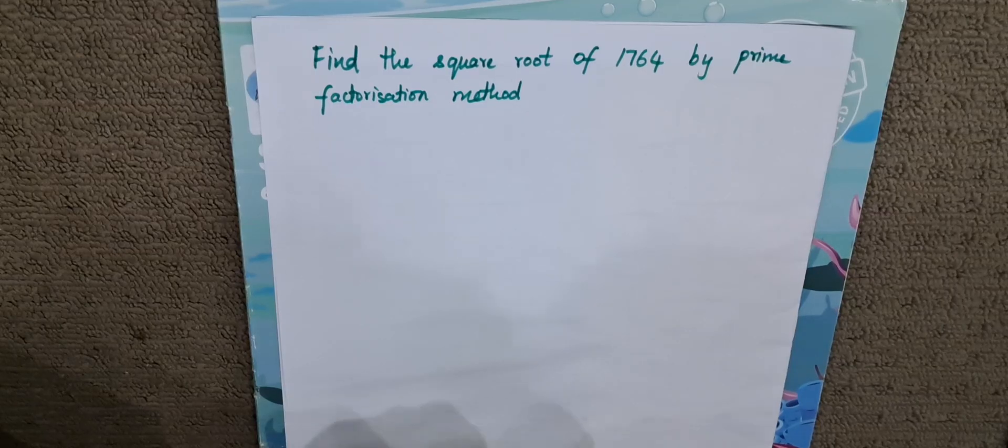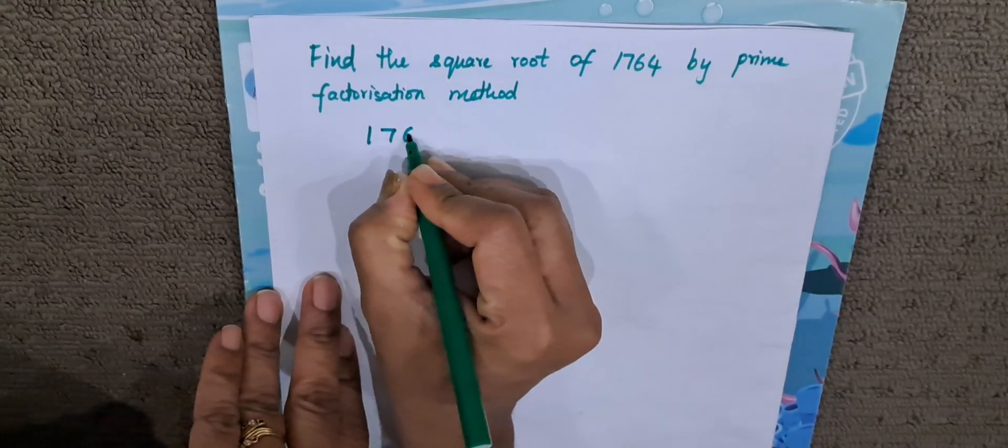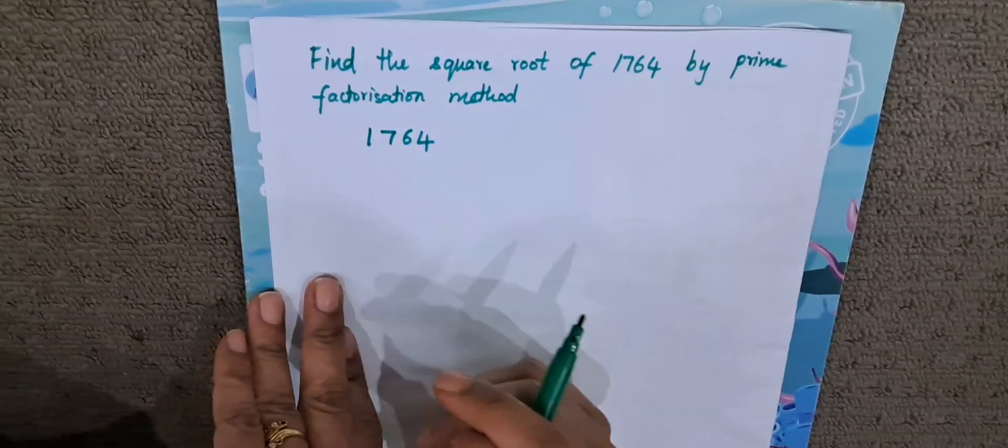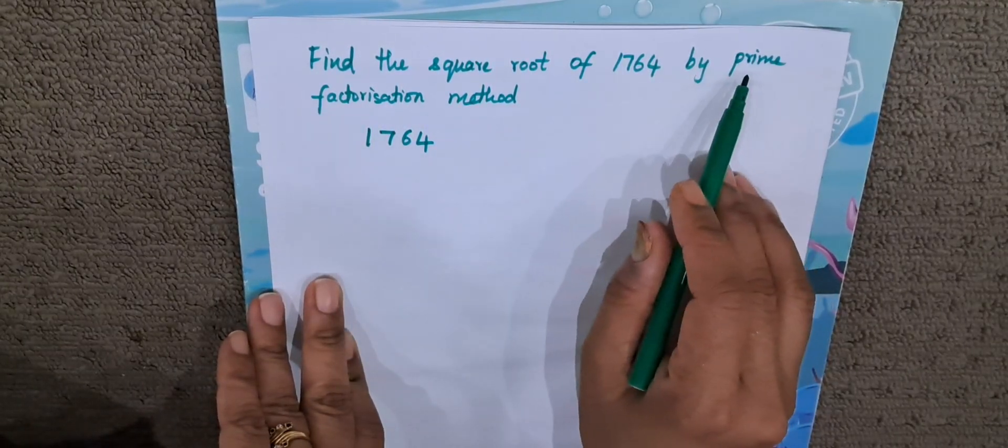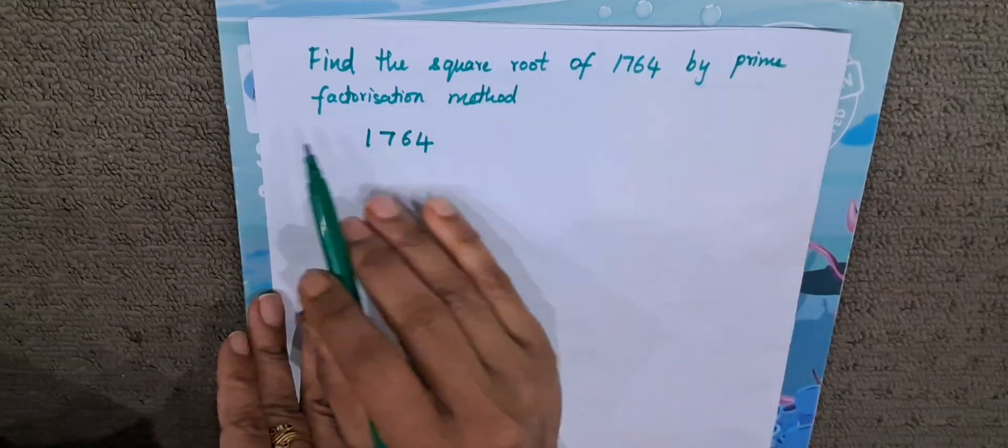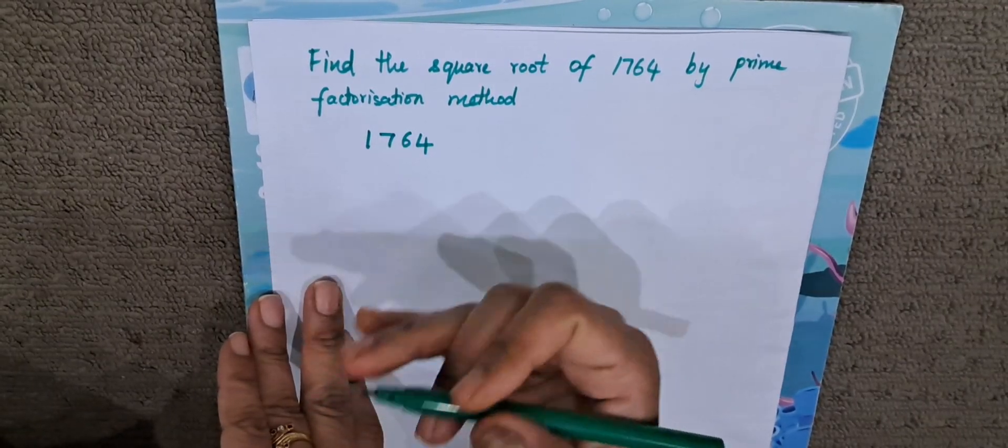Let us begin with finding the square root. We will write down the number 1764. Whenever we see that we have to do the square root by prime factorization, it means we have to go on dividing by the prime numbers.